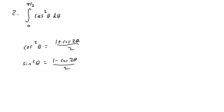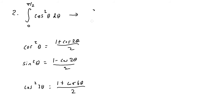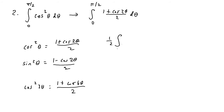For example, if you have cosine squared of three theta, you'd write one plus cosine of six theta over two, since you multiply two times three. Now rewriting the integral from zero to pi over two, instead of cosine squared we write one plus cosine of two theta over two, with d theta. Since one half is a constant I can take it outside: one half times the integral from zero to pi over two of one plus cosine of two theta, d theta.